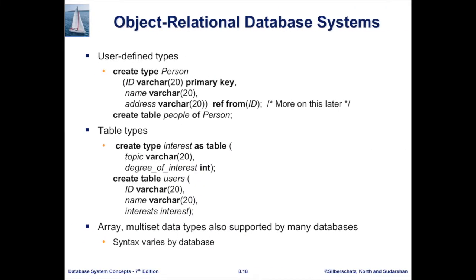For object-relational database systems, here is the first approach — building object-relational database systems. The object-oriented database system can define object types like 'person' with properties: ID, name, address. You can create a table from it using 'CREATE TABLE people OF TYPE person'. You can also directly create a table like 'CREATE TABLE users' with attributes including ID, name, and interests.